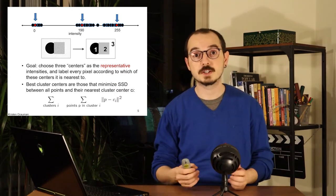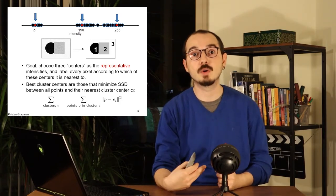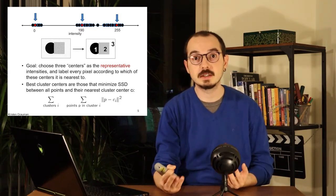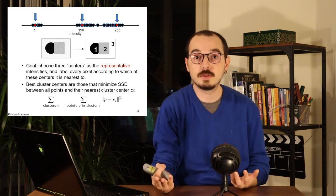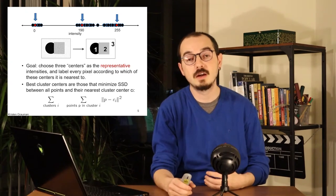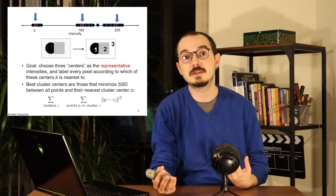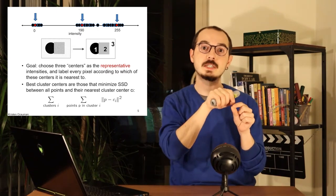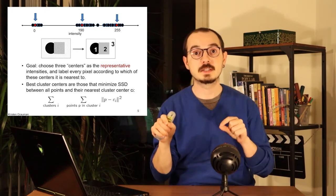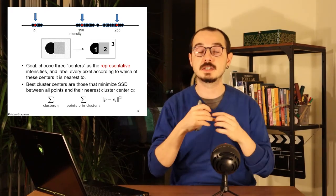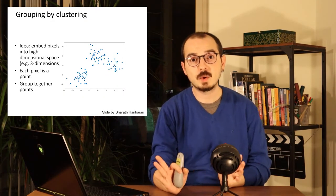We can define a loss function or error function that adds up all the clusters — all the points in the clusters — in terms of their distance to the mean, to measure the quality of our segmentation. If this error is not at the minimum, we need to put some pixels in other bins so that the SSD between that pixel and the mean will be smaller, and the summation of all errors will be smaller.